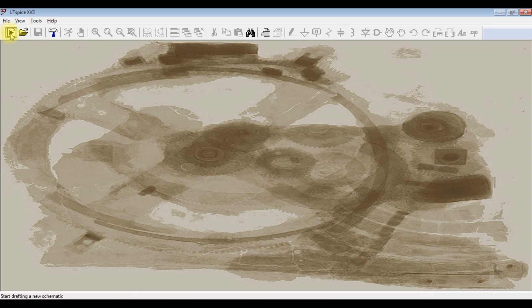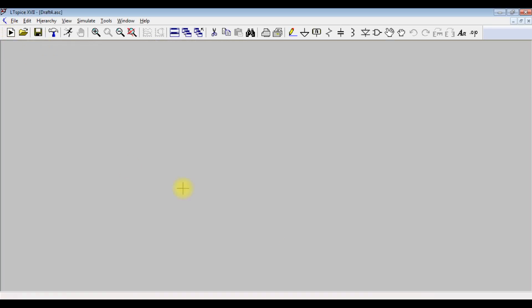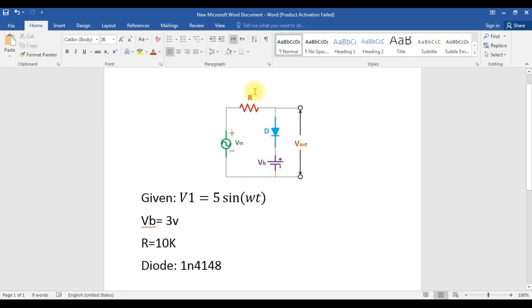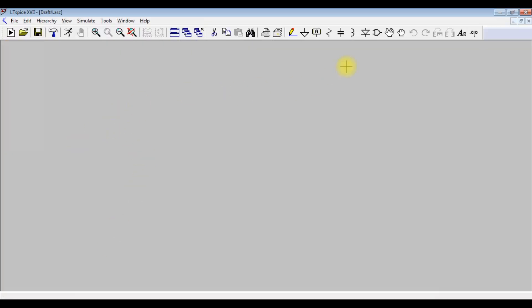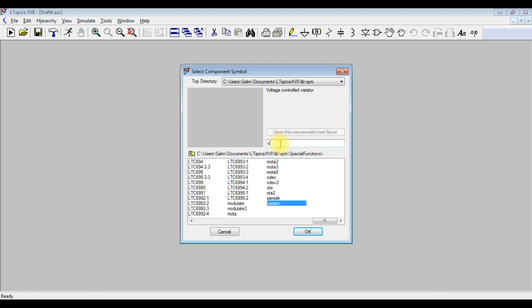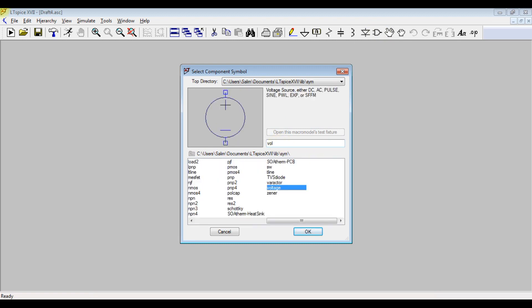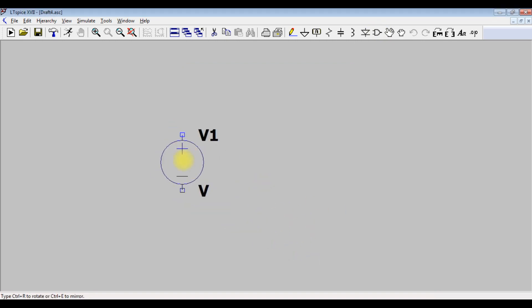First, we are going to click on new schematic. The clipper circuit is shown here. We need a voltage source. Press on component, voltage, okay.